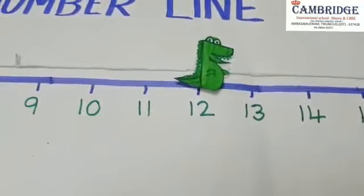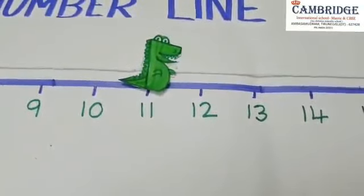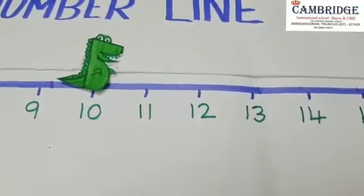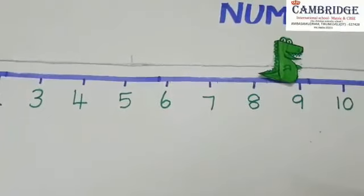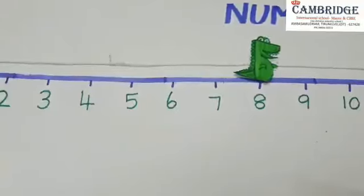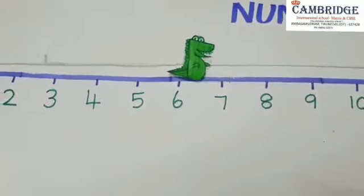Before 13, 12. Before 12, 11. Before 11, 10. Before 10, 9. What comes before 9? 8.